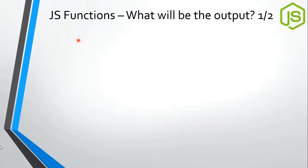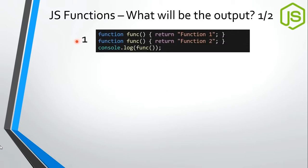The behavior of JavaScript functions is quite different compared to modern languages like Java, C, C++, or C#. Let's look at this code — what would be the output? In modern languages, it's an error because a function declaration with the same name is not possible. Similarly, calling such a function would fail because the same function name is not allowed. You can overload by changing the number or type of parameters, but here two identical functions with the same name are declared.